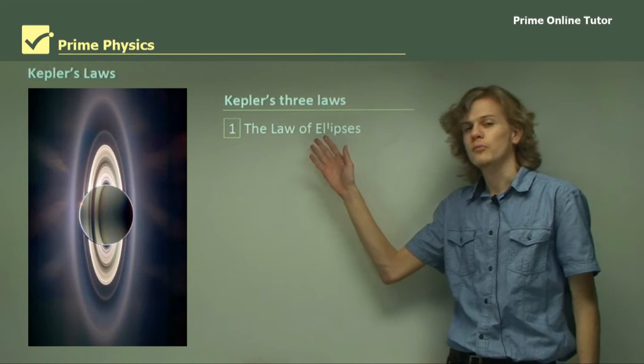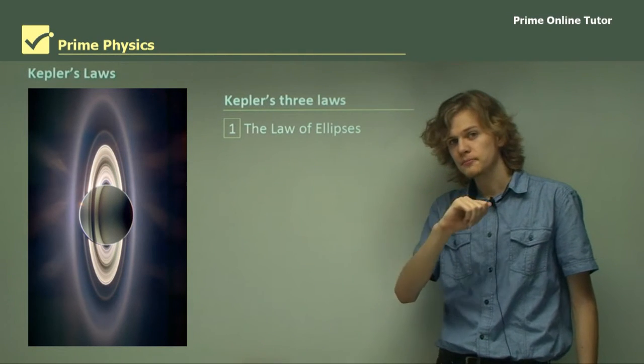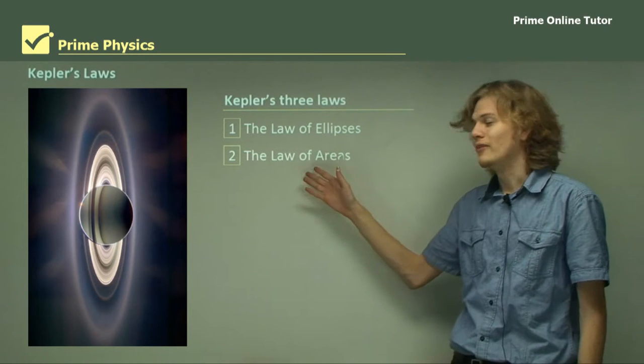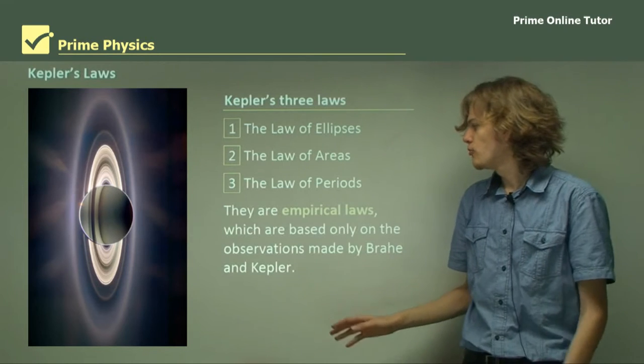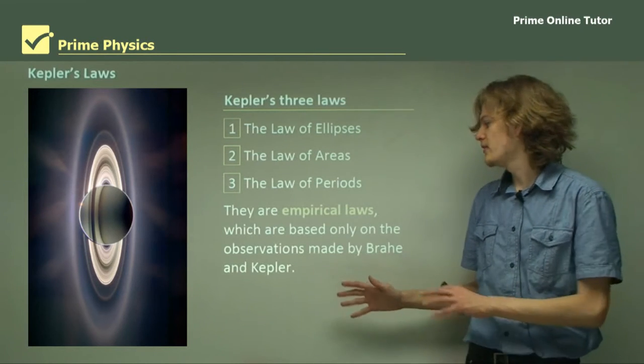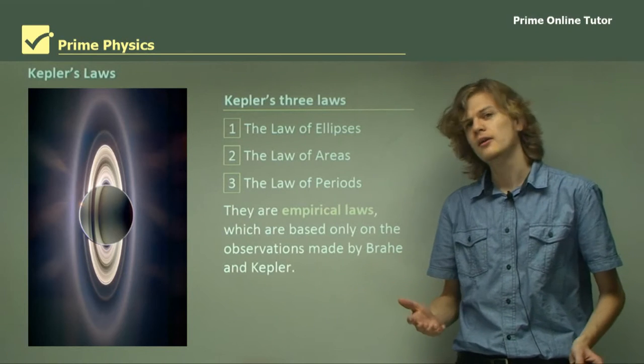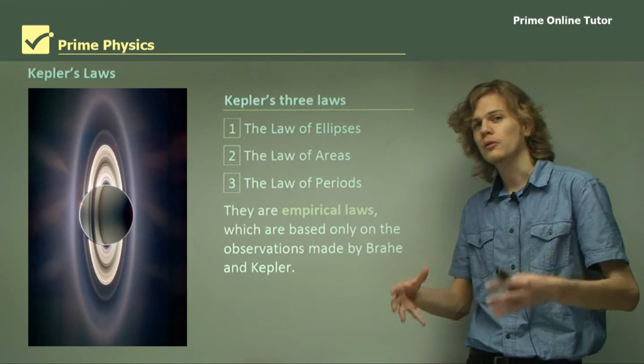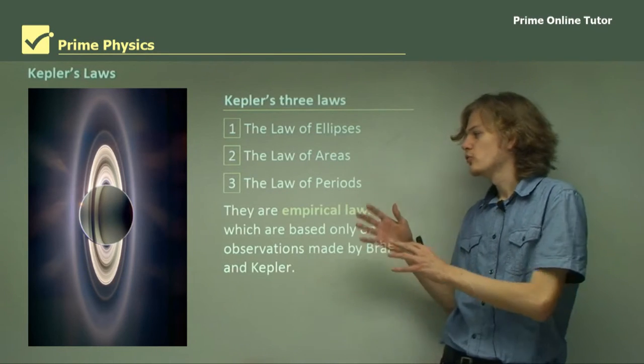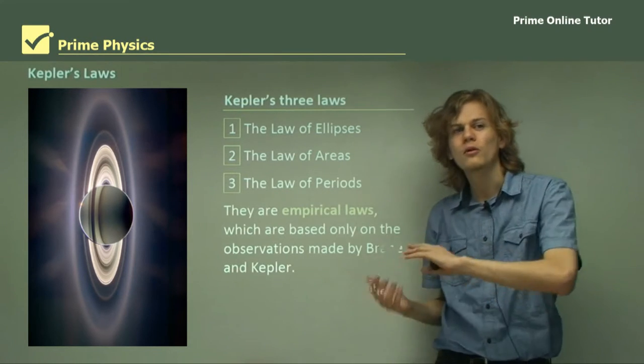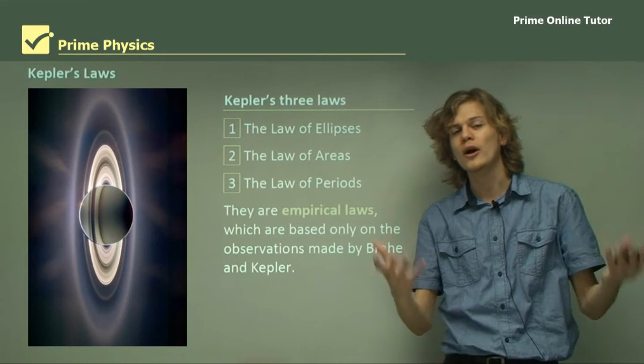Kepler's three laws that we remember him for are the law of ellipses, the law of areas, and finally, the law of periods. They are empirical laws, which means that they are based on observations which were made by Brahe and Kepler. They're not based on a mathematical model that Kepler already had. He created his own mathematical model based only on the observations that he made, without having any way to explain them.